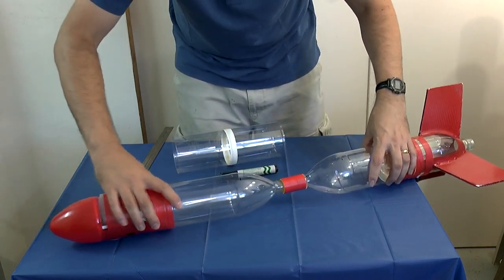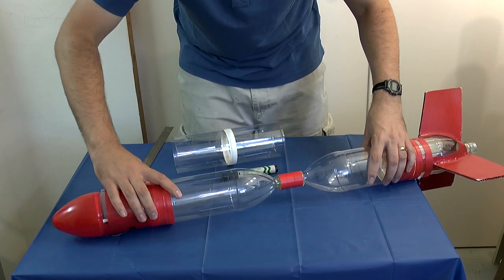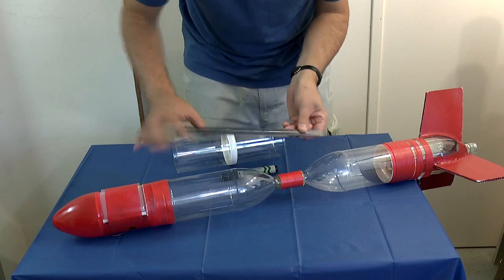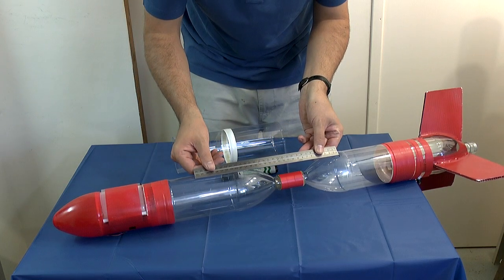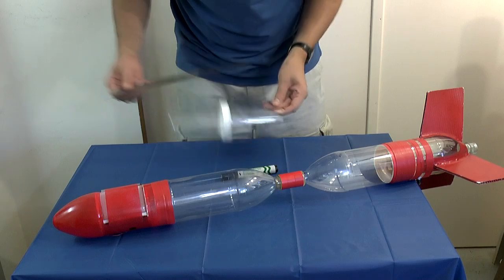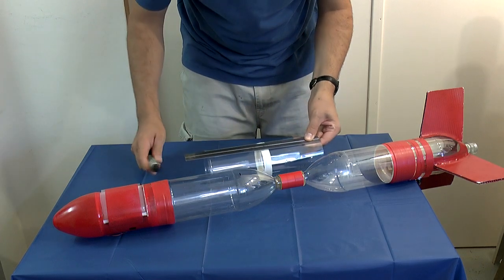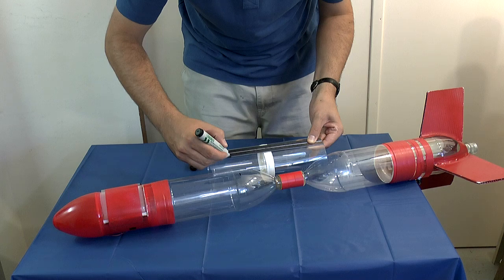Now screw the rockets together until the marks line up, and then use a ruler to figure out how long it is. Then transfer that measurement onto the sleeve.